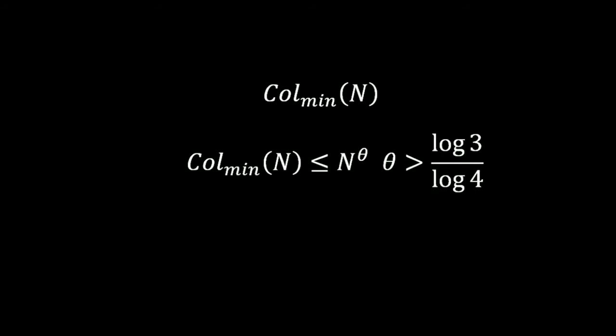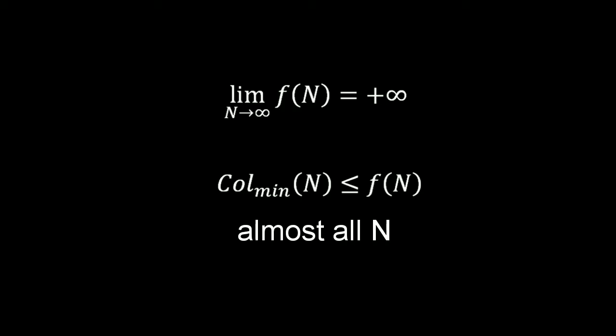Considering more partial results like this, Terence Tao showed the existence of upper bounds of this function. He showed that for all functions diverging to positive infinity, col_min(n) is less than or equal to f(n) for almost all n. For the notion of almost all, he used logarithmic density instead of natural density for its better invariant properties.